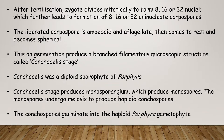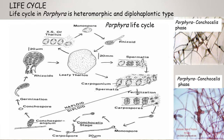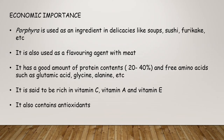This leads to formation of 8, 16, or 32 uninucleated carpospores. The liberated carpospore is non-motile and aflagellated; it comes to rest and becomes spherical. On germination it produces a branched filamentous microscopic structure called the conchocelis stage. The conchocelis stage is a diploid sporophyte of Porphyra. It produces monosporangia, which produce monospores. The monospores undergo meiosis to produce haploid conchospores, which germinate into the haploid Porphyra gametophyte. The life cycle of Porphyra is heteromorphic and diplo-haplontic type.